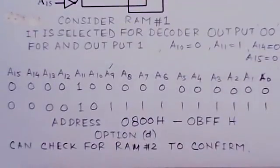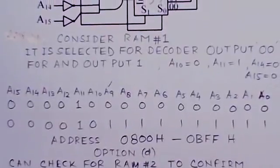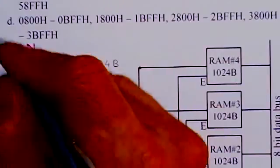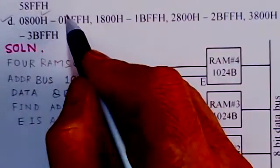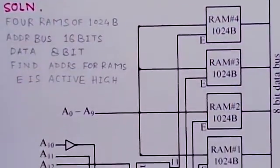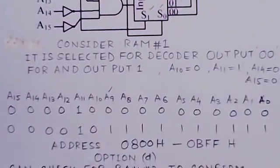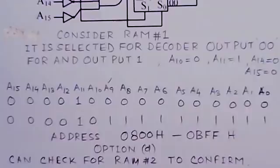And this address range corresponds to the chip. You can notice here, this corresponds to option D. The first range of address is here. So the other options do not have this as address location. So you can take option D.